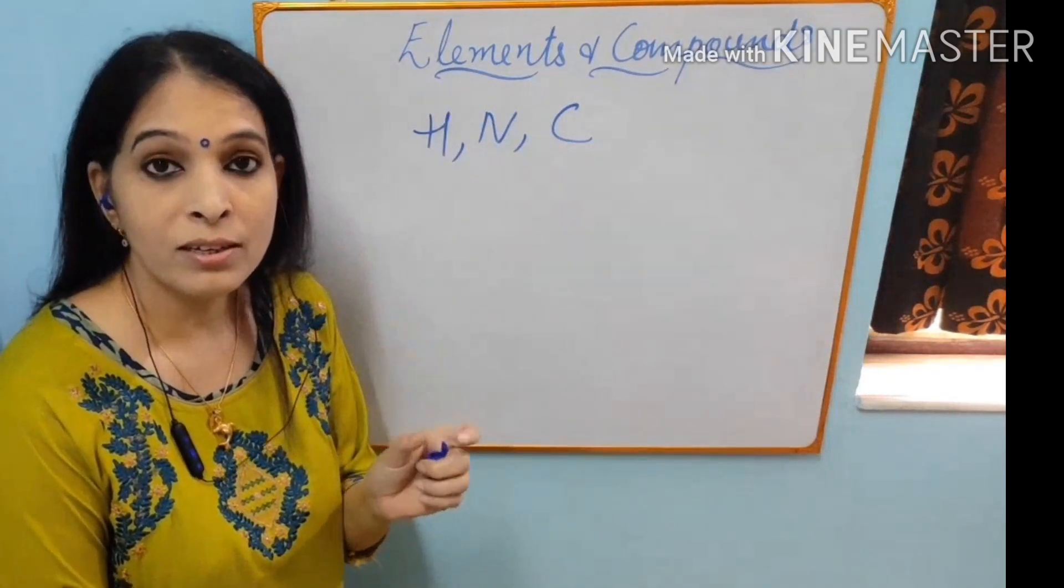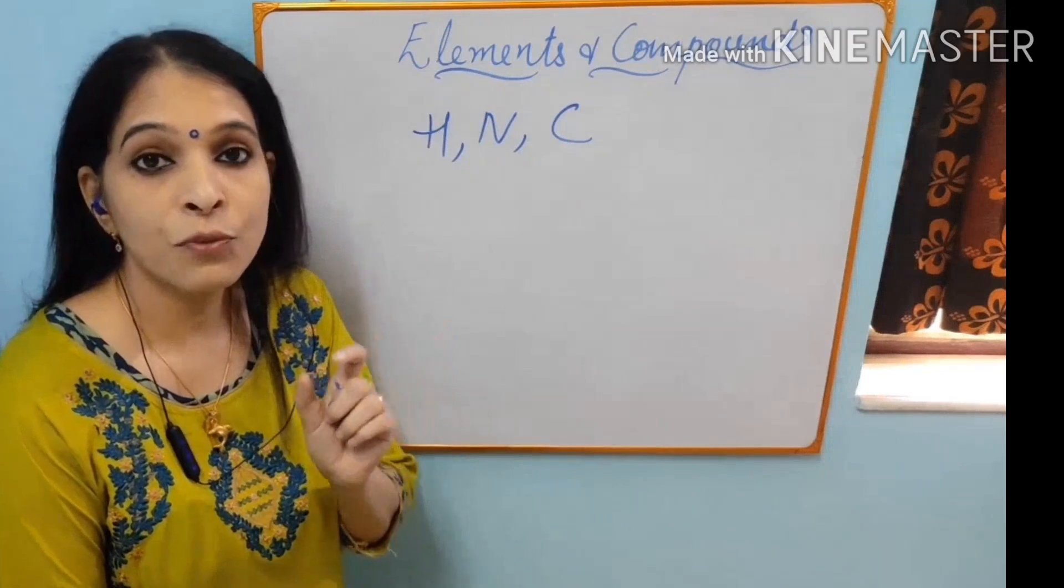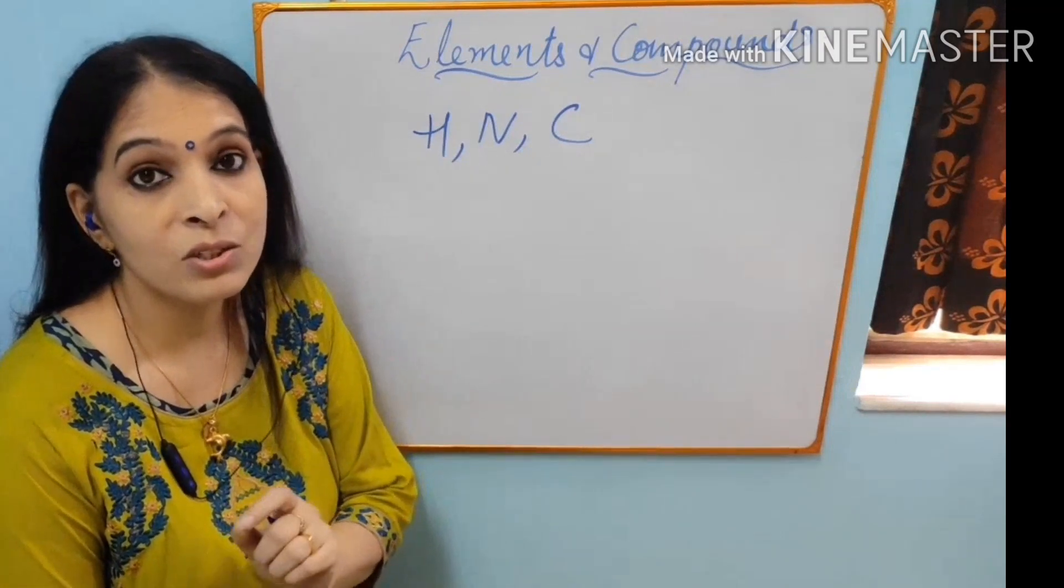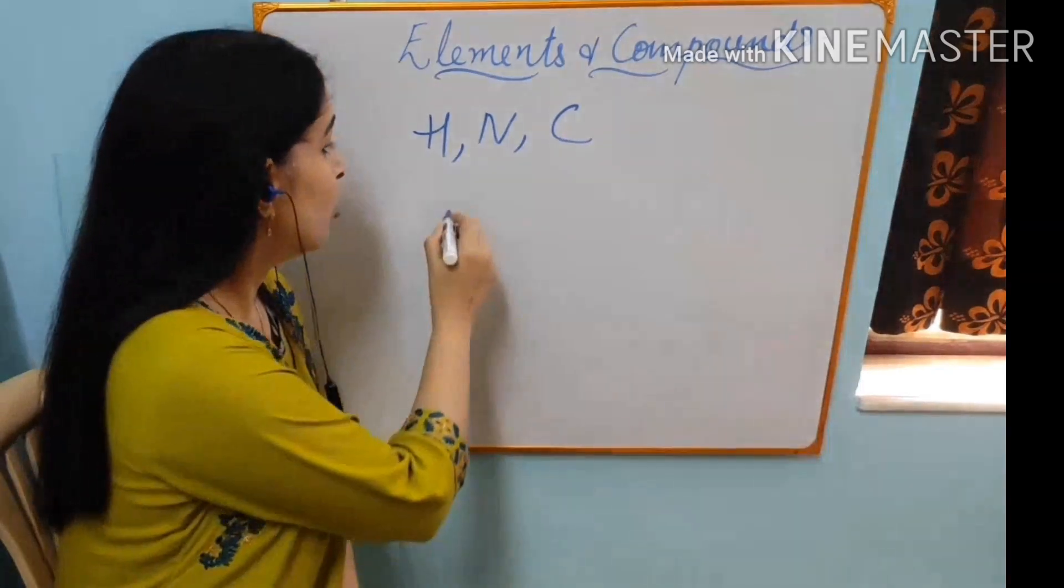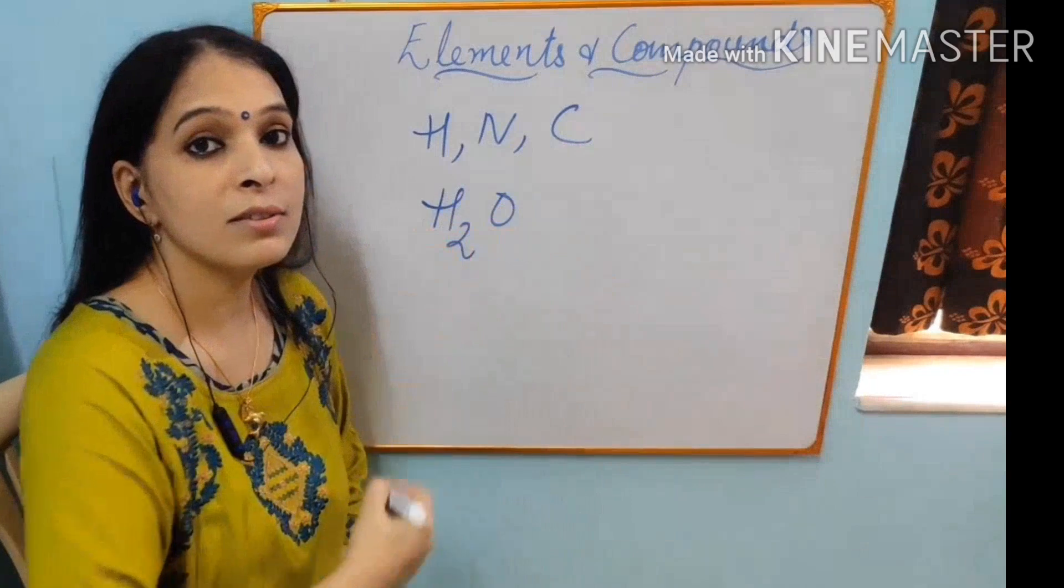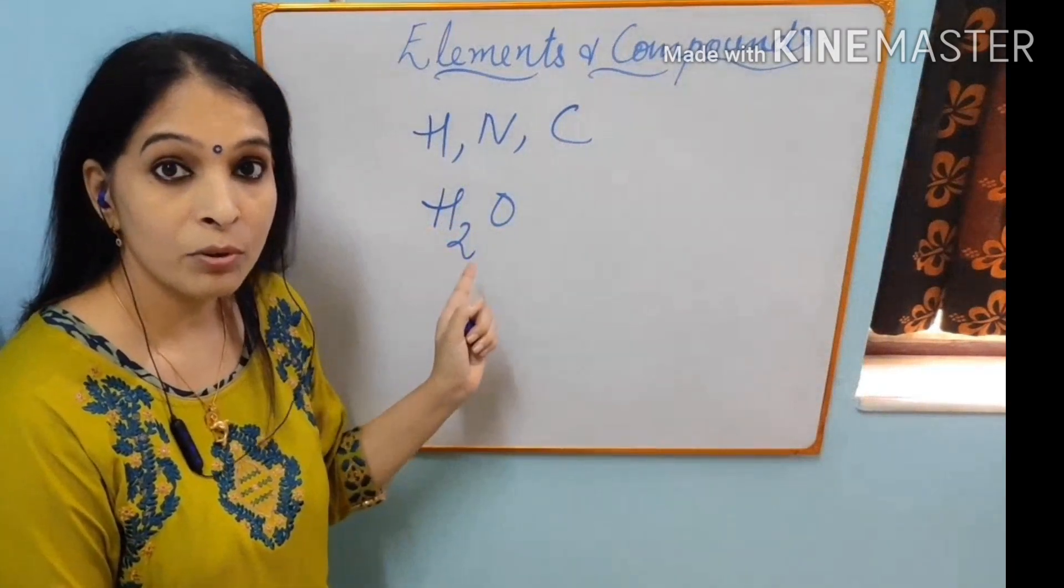Whereas a compound is a chemical substance formed by two or more elements combined chemically together. For example, water, H2O, hydrogen and oxygen combined to form water. This is a compound.